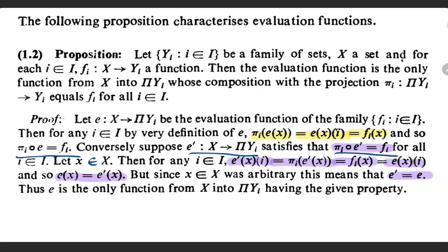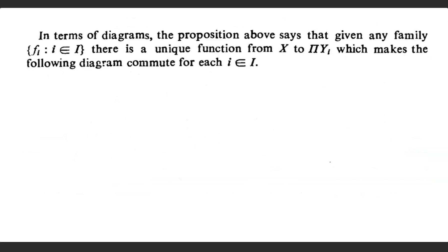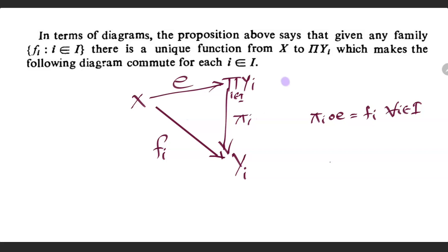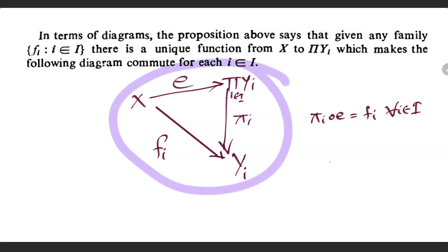Since the point x was arbitrary, this implies that e' is equal to e. Thus, e is the only function from x into product yi having this property. So we have proved the characterization of evaluation functions. In terms of diagrams, the characterization says that if we are given any family fi with functions defined from x to yi, we already have projection functions defined from product yi to yi, and evaluation functions defined from x to product yi. Then pi_i composition e is equal to fi for all i, meaning e is the unique function from x to product yi which makes this diagram commute for each i element of capital I.